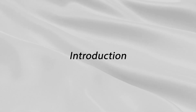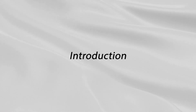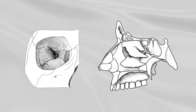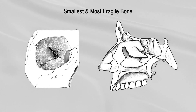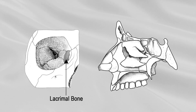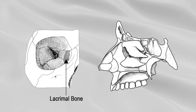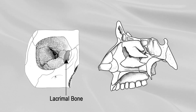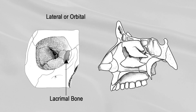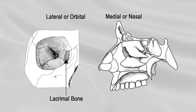LACRIMAL BONE — INTRODUCTION. The lacrimal bone, the smallest and most fragile bone of the face, is situated at the front part of the medial wall of the orbit. It has two surfaces: lateral or orbital, and medial or nasal.